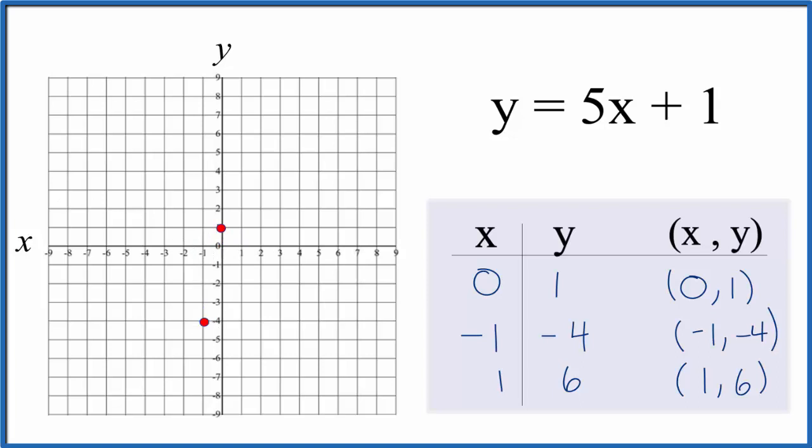We have two points. We could just use two points but I like to use three because if I make a mistake here I'll always catch it. So I have x is 1, y is 6, 1 and 6 and there we go. There's our line.